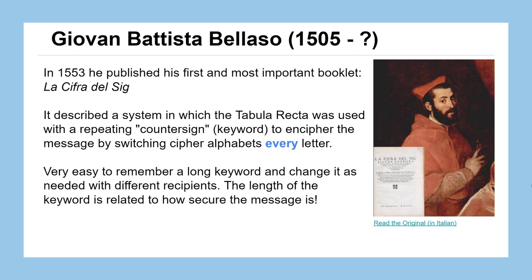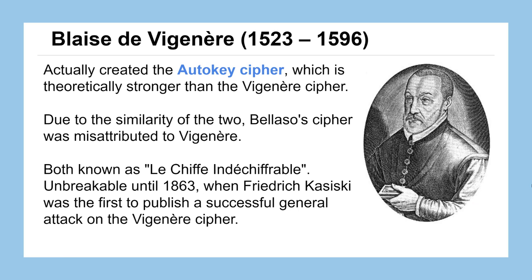Why is it called the Vigenère cipher if it was invented by Bellasso? That's because Blaise de Vigenère had a kind of improved version of it that we'll learn later in this course, called the auto key cipher, which is a variation on this one. That's the one that got to be better known, and as a result, the original was misattributed to Vigenère as well, when it was really Bellasso's.